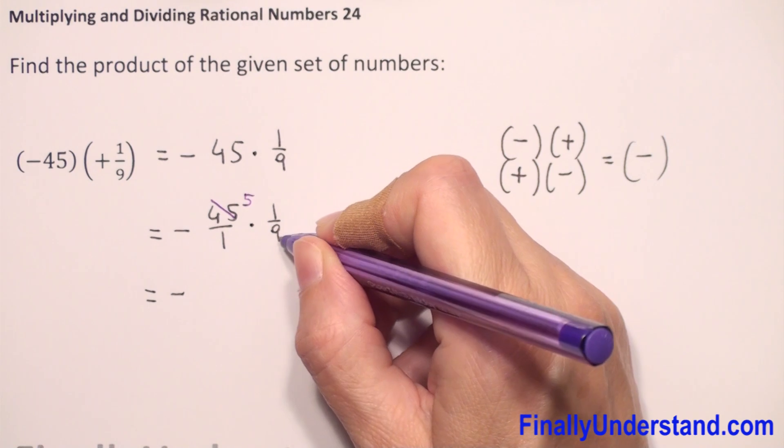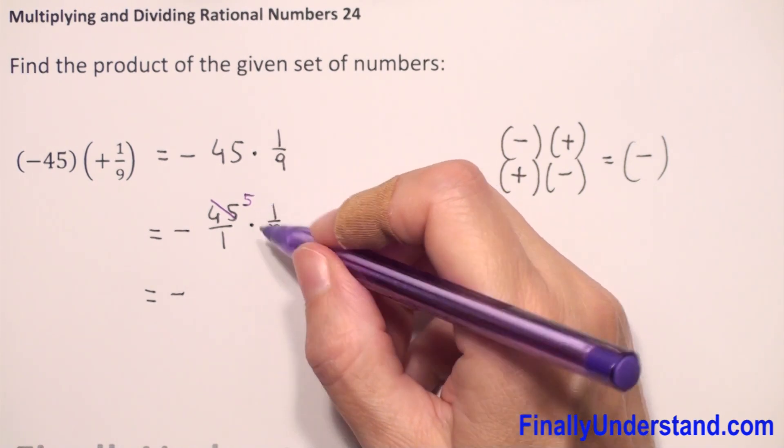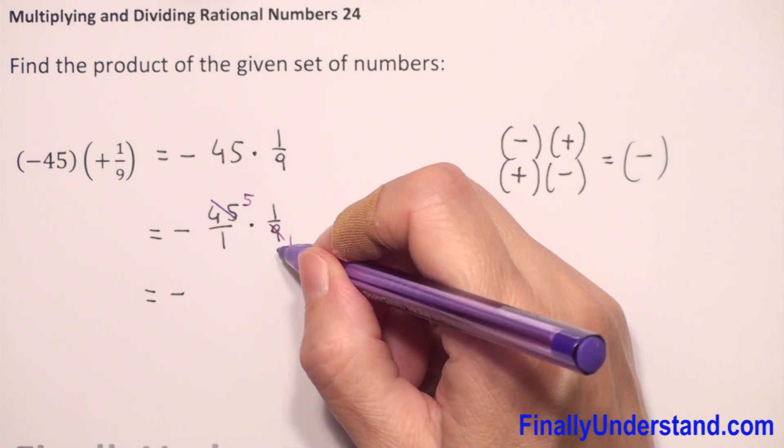When we reduce, we divide numerator and denominator by the same number. I divide numerator by 9 and denominator by 9.